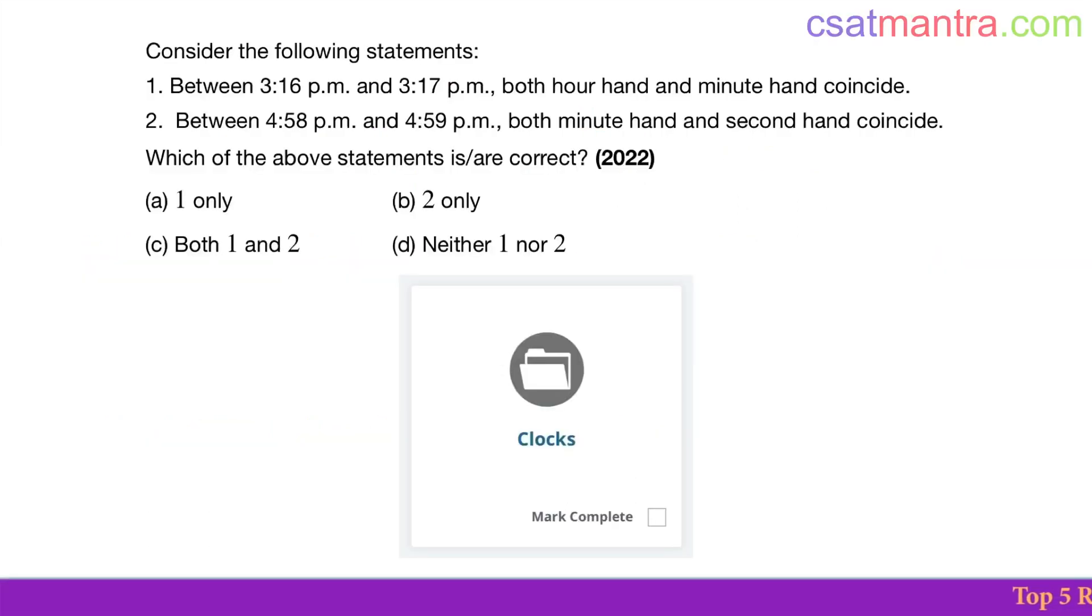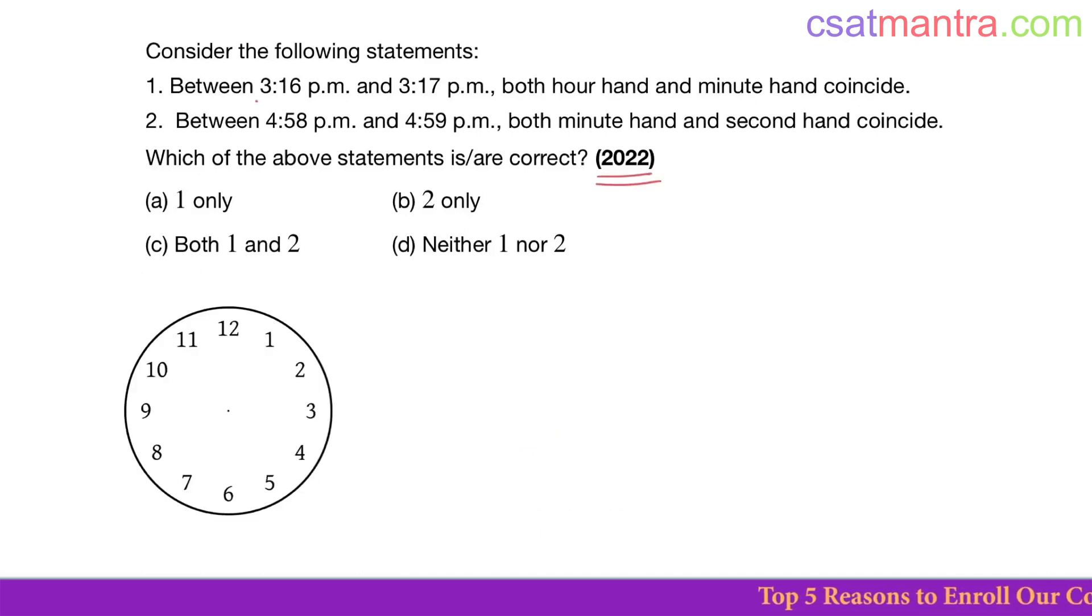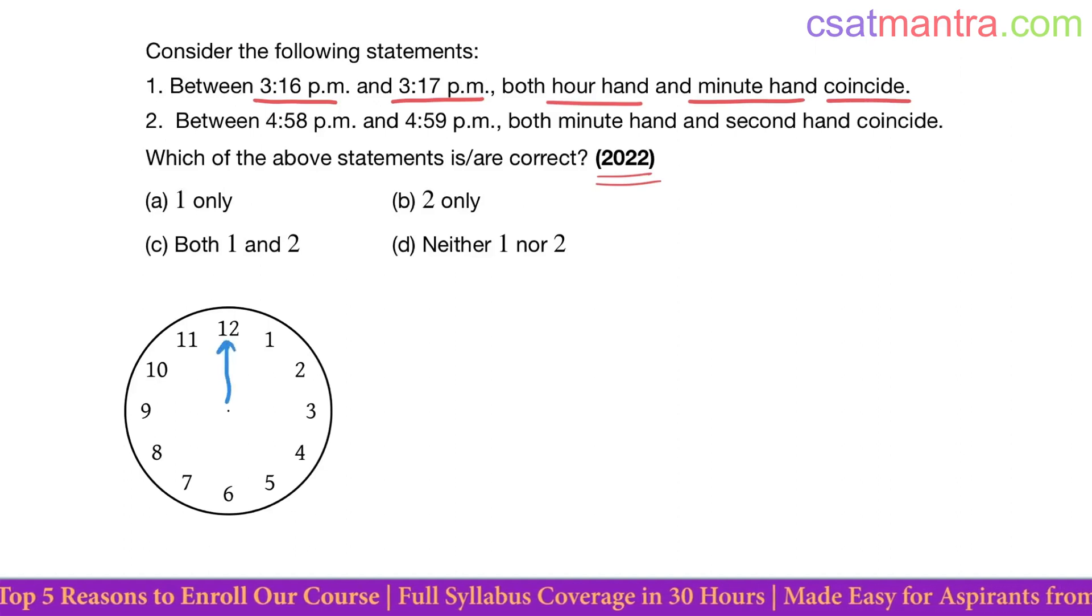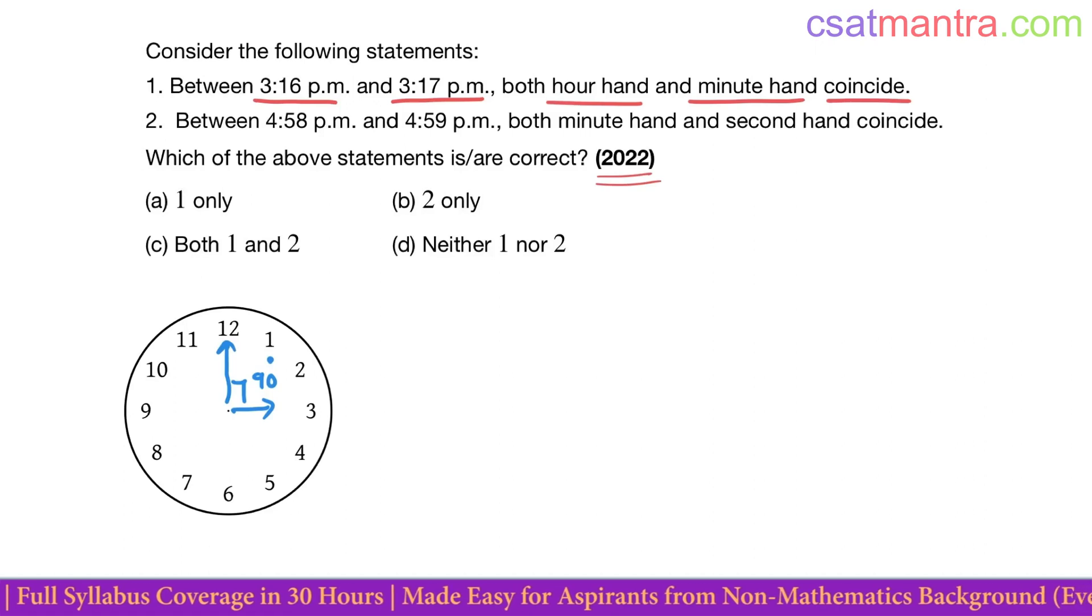This question is asked in 2022 based on clocks. Between 3:16 PM and 3:17 PM, both hour hand and minute hand coincide. Let's check this statement. See, our reference is 12 o'clock. When the time is 3 PM, this hour hand makes 90 degrees with the 12 o'clock. Okay, hour hand is making 90 degrees when the time is 3 o'clock.